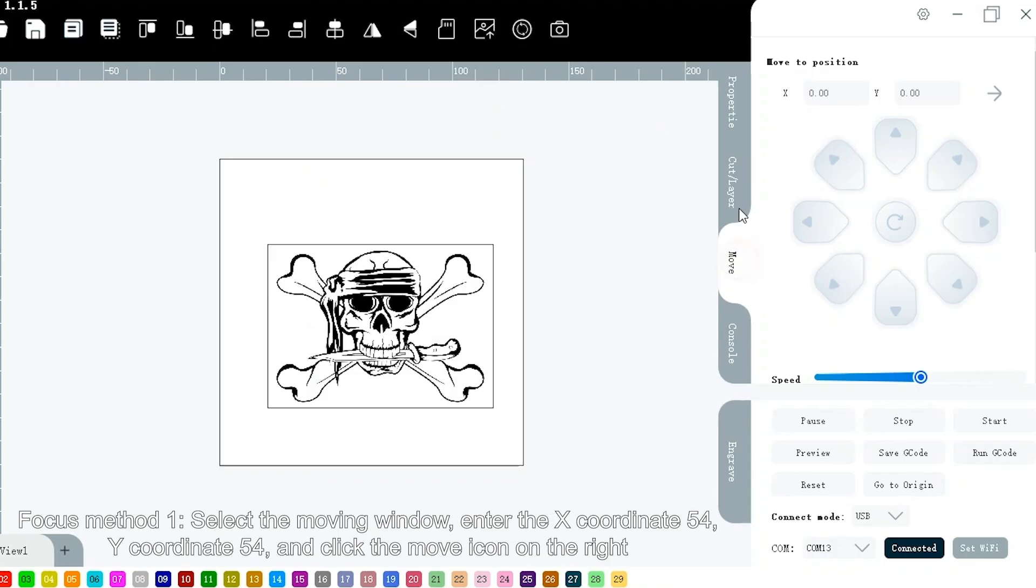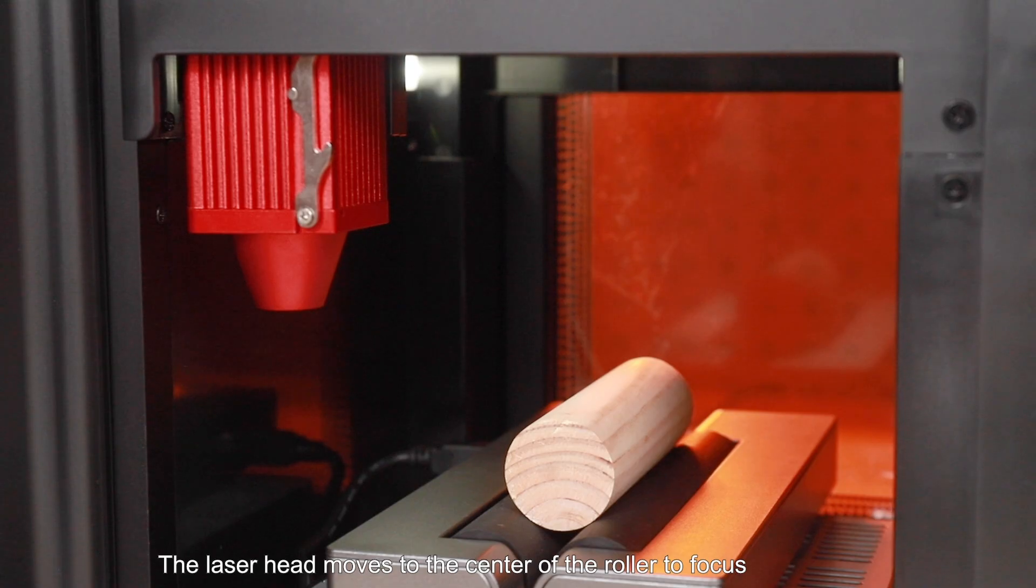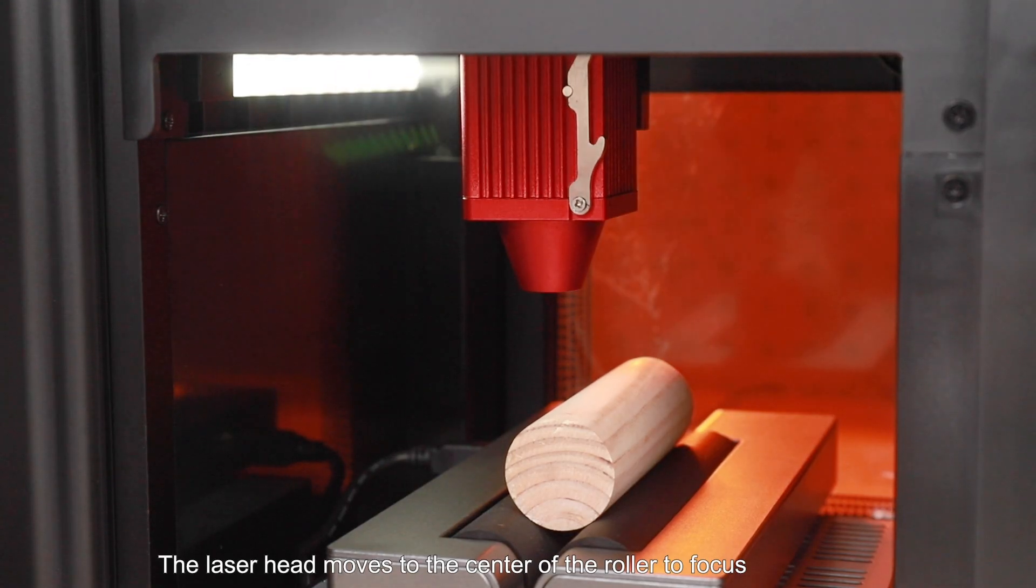Focus method 1: Select the moving window, enter the X coordinate 54, Y coordinate 54, and click the move icon on the right. The laser head moves to the center of the roller to focus.